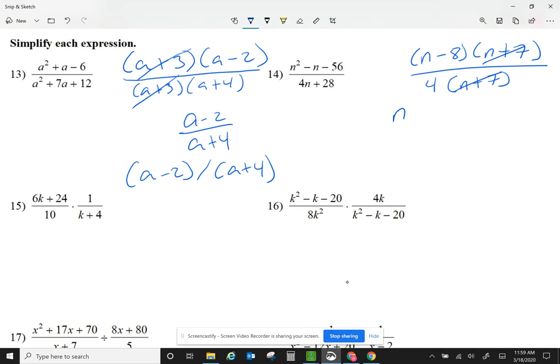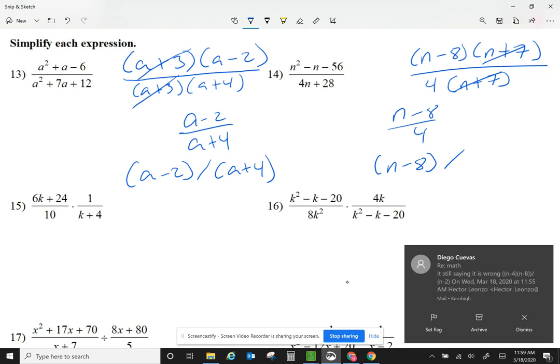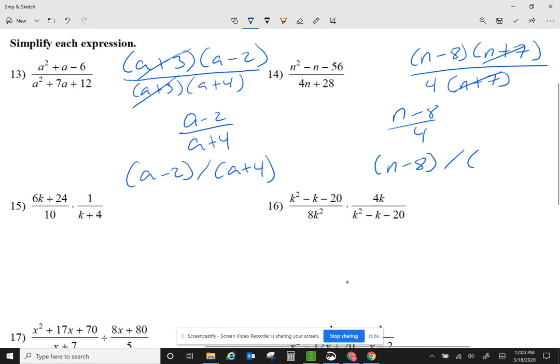Cancel the n plus 7. So I get n minus 8 over 4. I will type that as n minus 8 over 4.